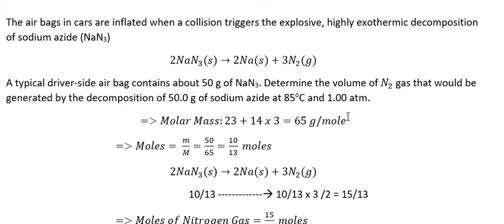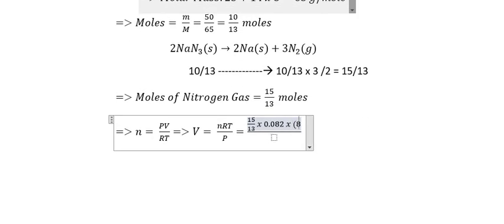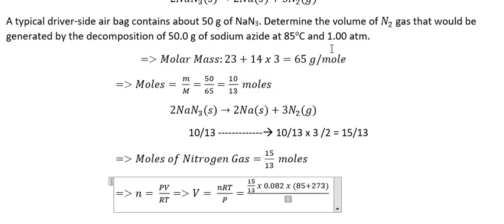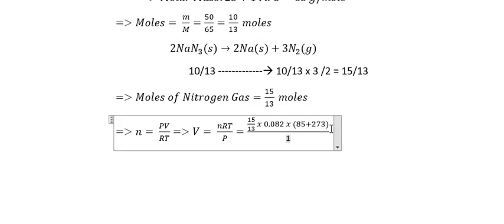And it's nRT over P. T is about the temperature and we need to use about the Kelvin and we have 85 plus 273. P is about the pressure and we have 1 we put in here.